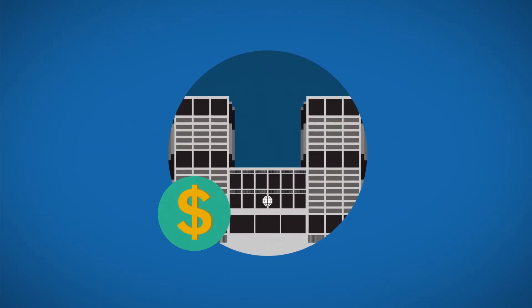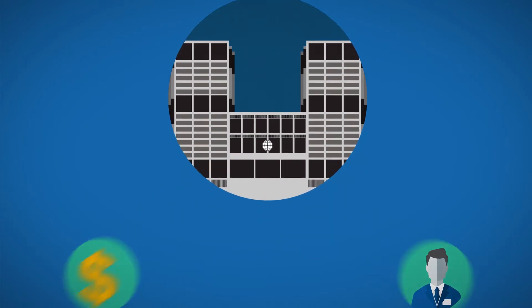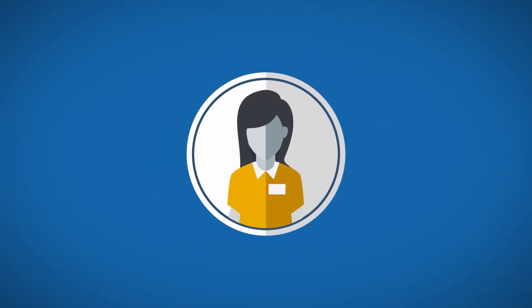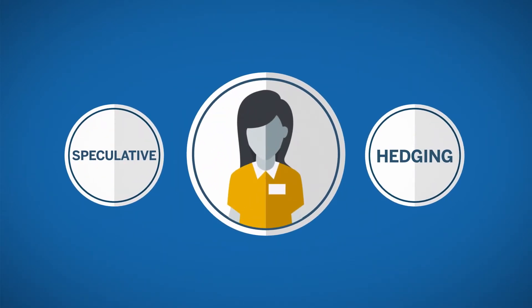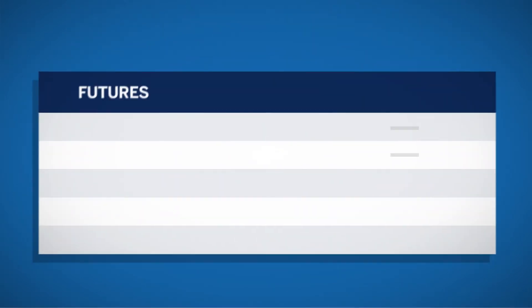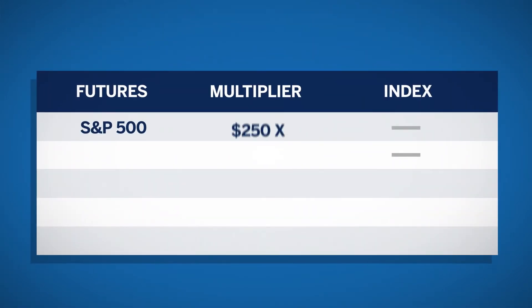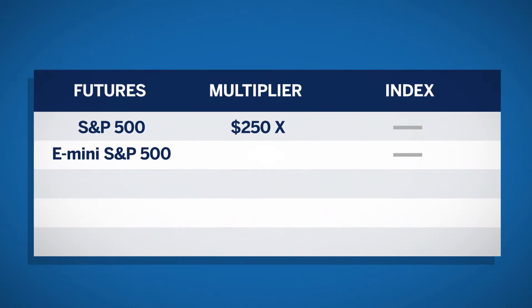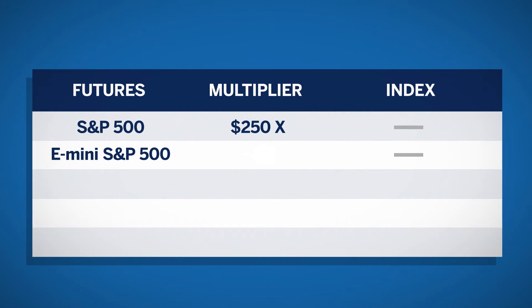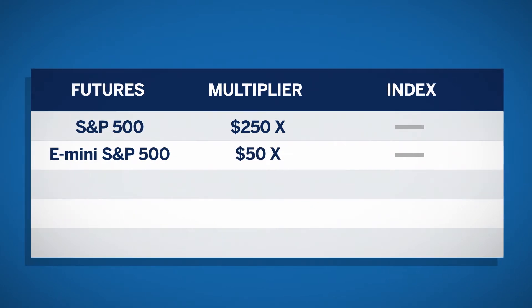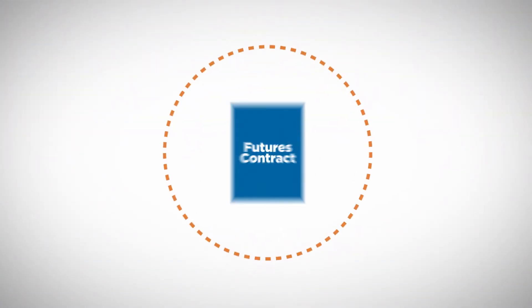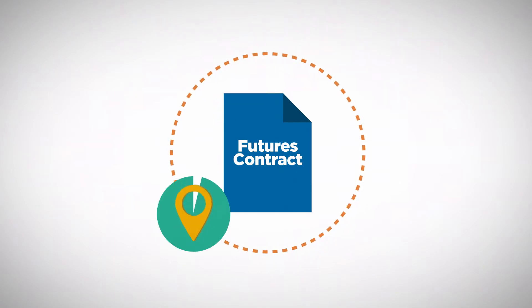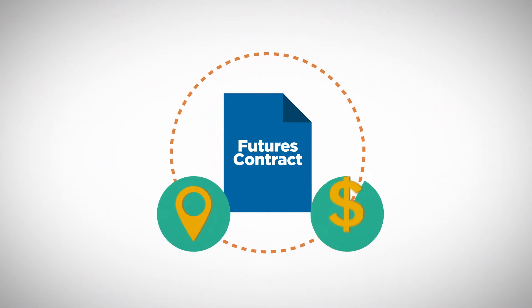The exchange defines the contract size to meet the needs of the market participants. For example, participants who wish to take a speculative or hedging position in the S&P 500 futures contract but cannot risk the exposure of that size contract — 250 times the S&P 500 — can instead use the e-mini S&P 500 futures contract to gain the exposure at 50 times the S&P 500 index.